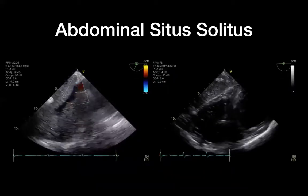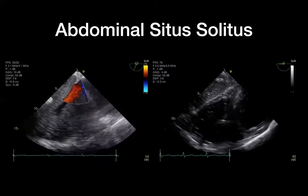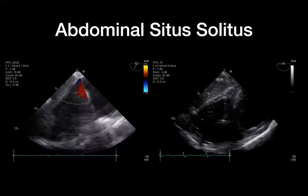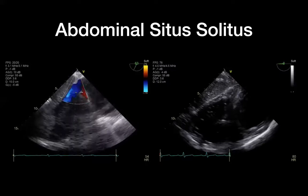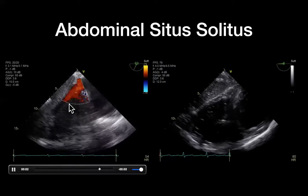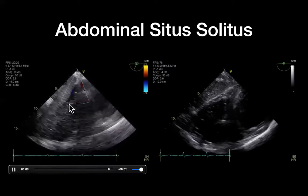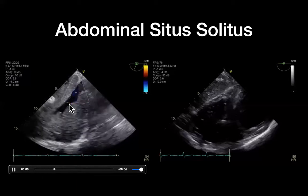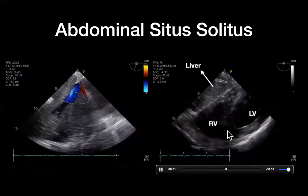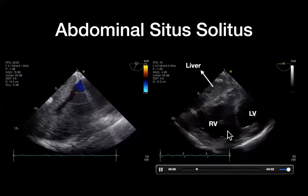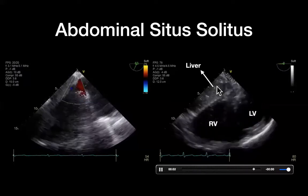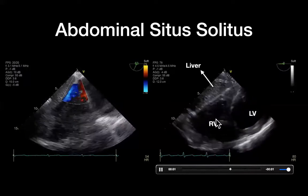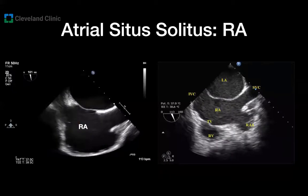Now let's go over how to use the TEE examination to figure out the visceral atrial situs. For the abdominal situs, we can use the liver. The video on the left shows the hepatic veins of a patient with a liver located on the right side of the patient — we can verify that very easily by turning the probe to the right from one of the transgastric views. The video on the right from a transgastric view at the base of the RV shows that the liver is located on the right side and is very closely related to the anatomically right ventricle. To determine the atrial situs, I rely heavily on two things: the atrial septum and the morphology of the atrial appendages.